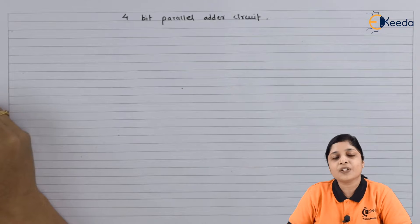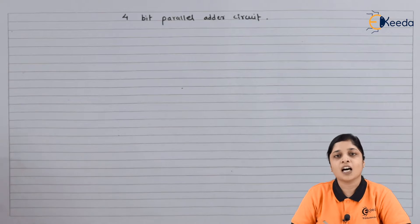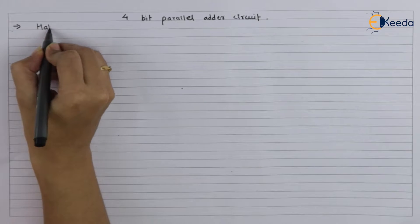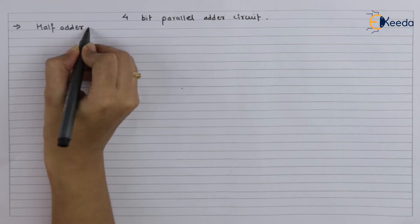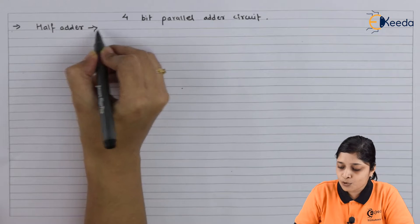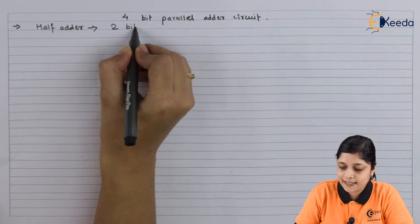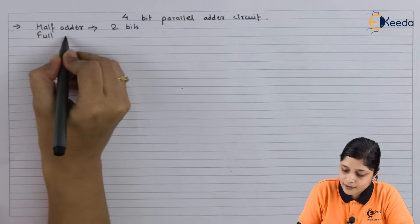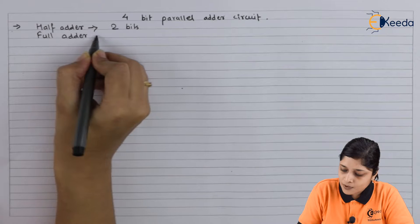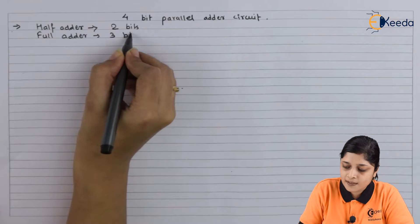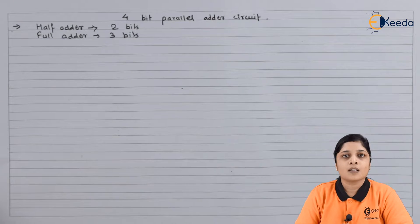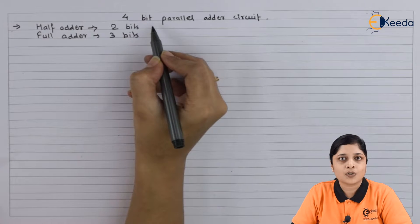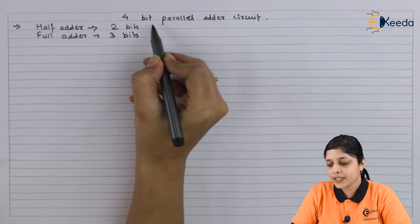Previously we have done half adder and full adder. In half adder, the concept was to add two single bits. Full adder is used to add three single bits. This is the case of greater than three bits, so for a 4-bit parallel adder circuit we can draw using full adder circuits.